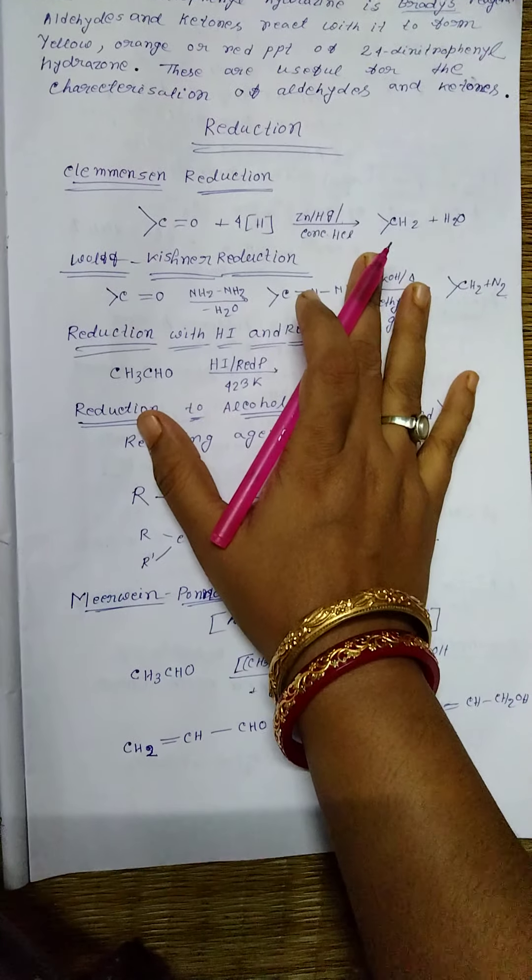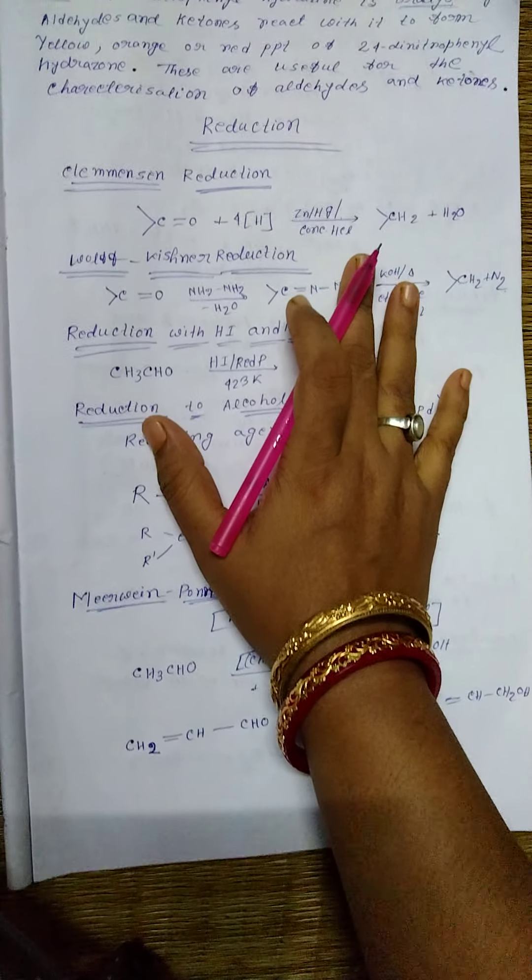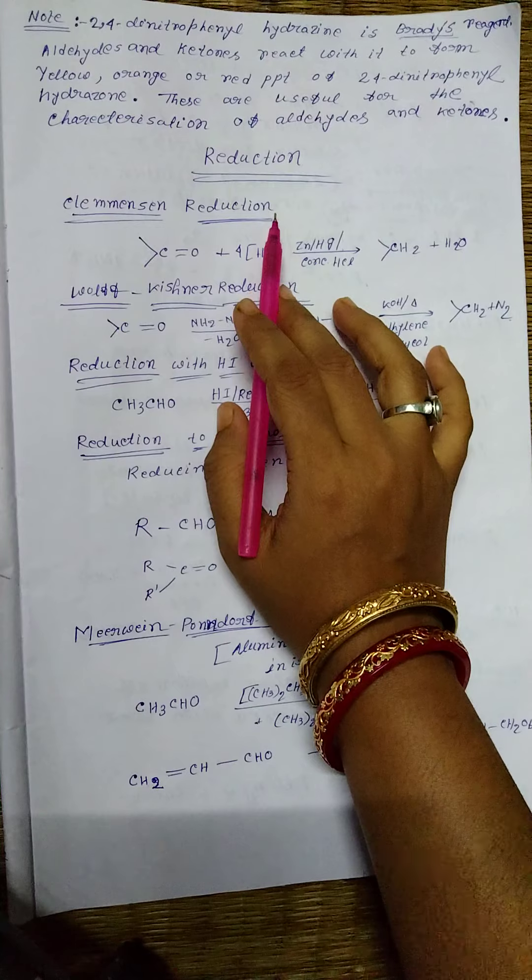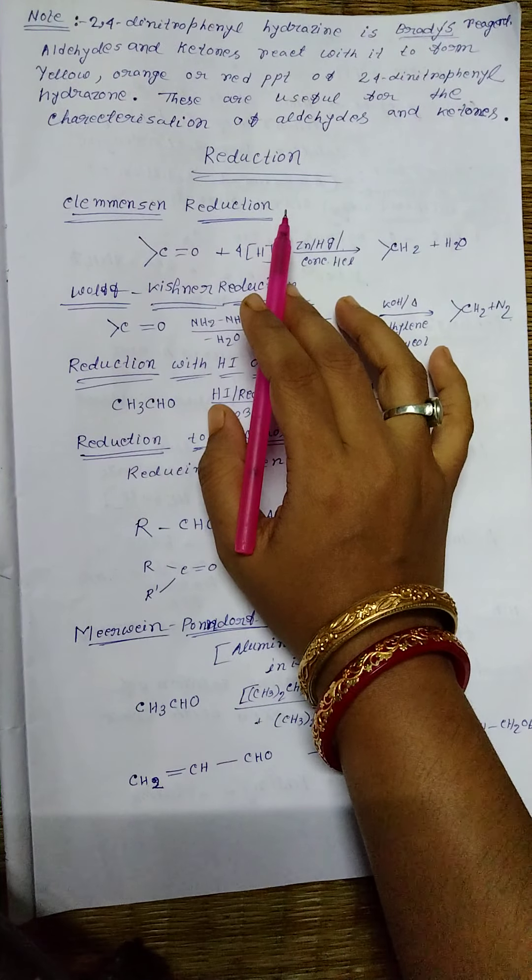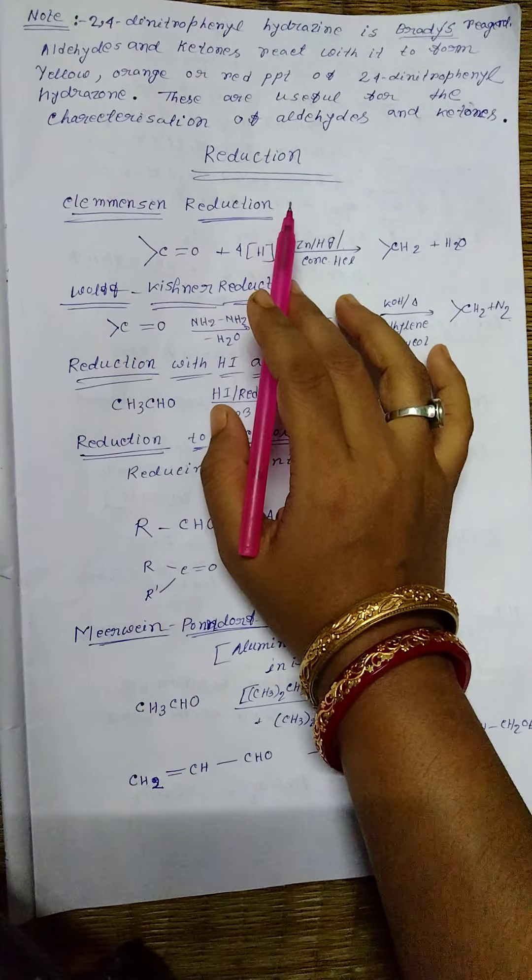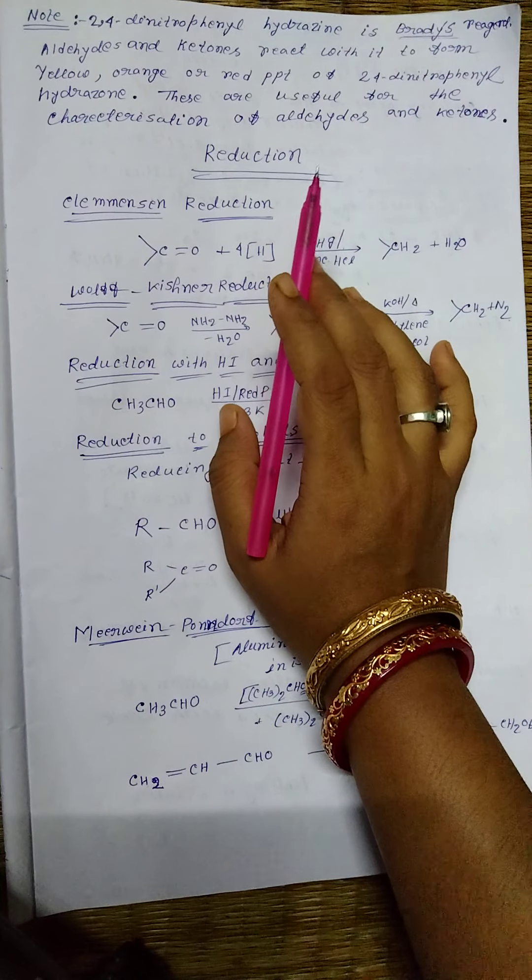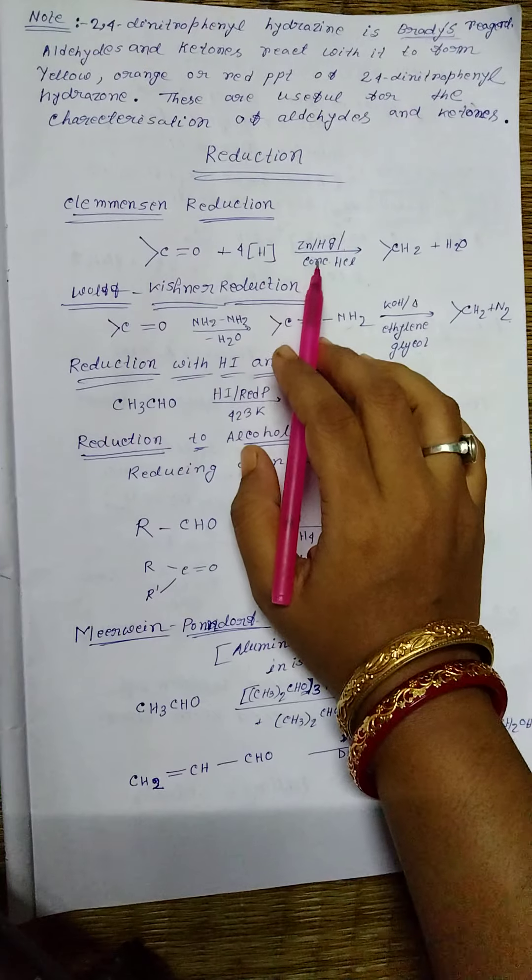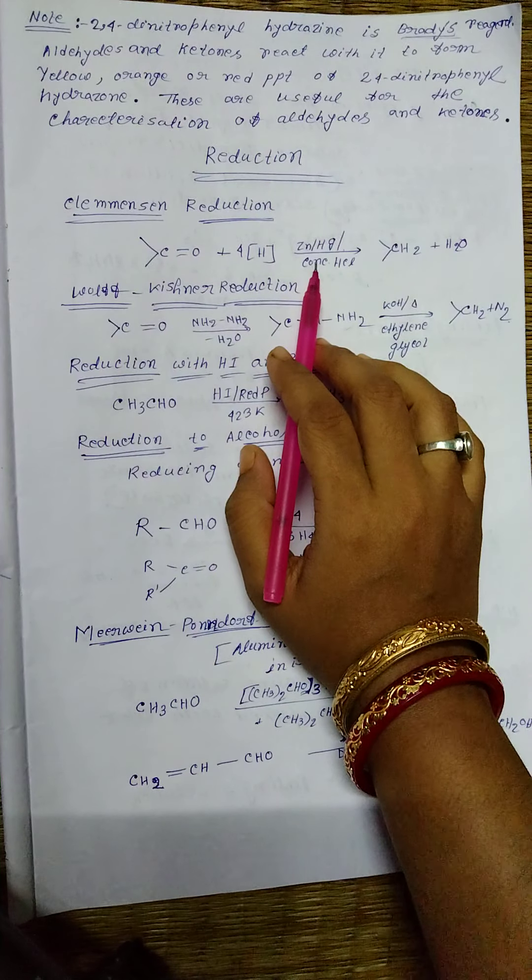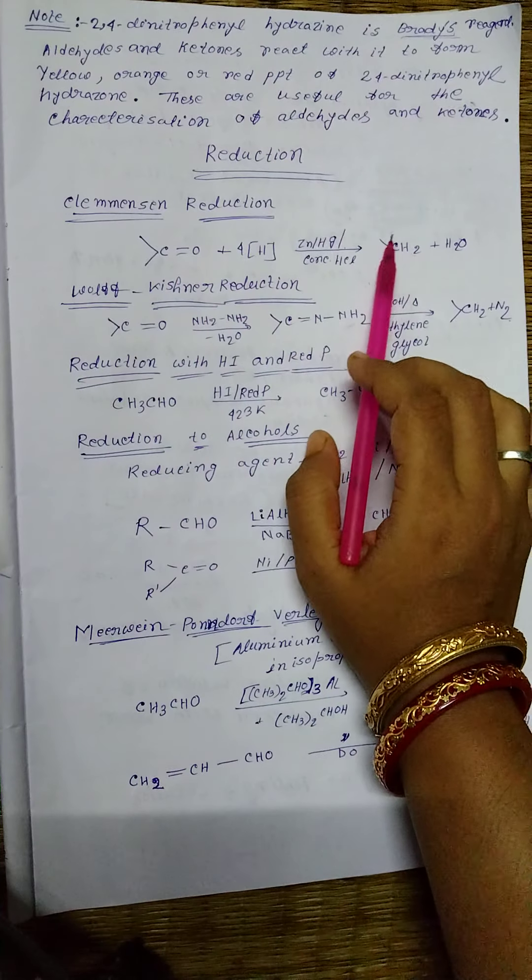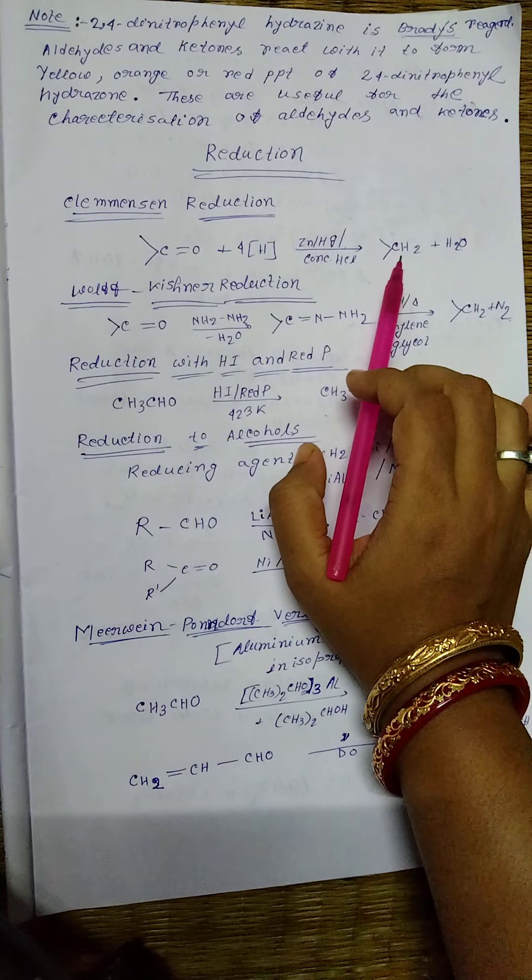Next, I am going to discuss reduction. The first reduction method is Clemmensen reduction, which is a most important name reaction. In this Clemmensen reduction reaction, the carbonyl group is reduced to a CH2 group.